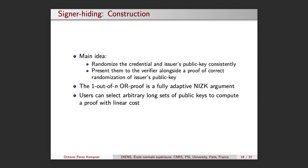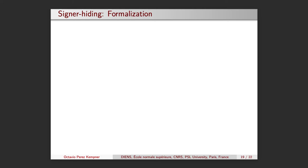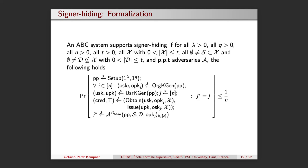With it, users can select arbitrary long sets of public keys to compute a proof with linear cost. The corresponding formalization reflects this. As can be seen, the idea is that an adversary should not be able to distinguish which was the organization that issued the credential when interacting with the environment under the role of a malicious verifier.